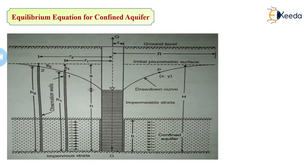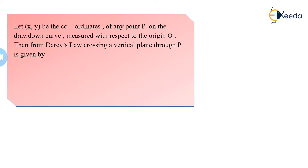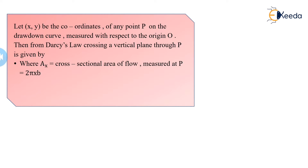We take one point P with coordinates X and Y with respect to the origin O. Let's start the derivation. Point P has coordinates X and Y. According to Darcy's law, Q = K × I × Area. Here, the area is taken as 2πX × B, the circumference of the well multiplied by the confined layer height B.